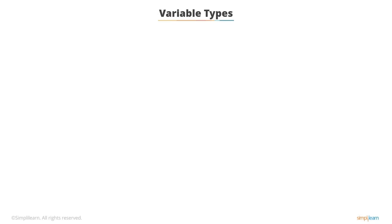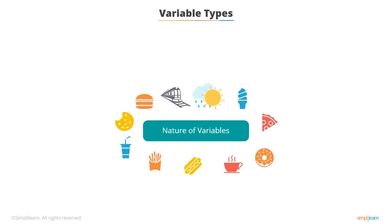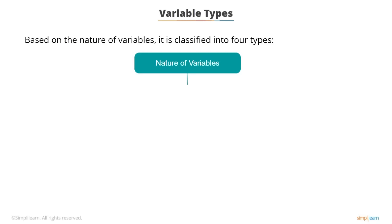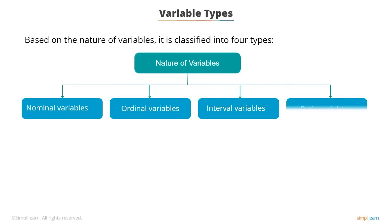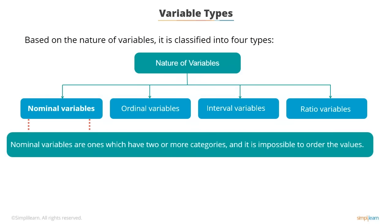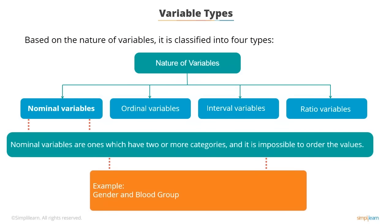Before performing any statistical tests with variables, it's important to recognize the nature of the variables involved. Based on the nature of the variables, they are classified into four types: categorical or nominal variables, ordinal variables, interval variables, and ratio variables. Nominal variables have two or more categories and it's impossible to order the values — examples include gender and blood group.